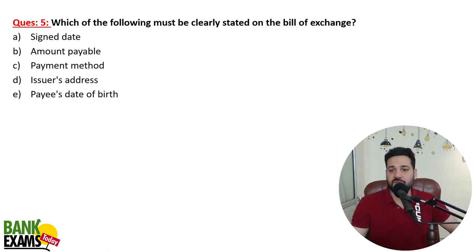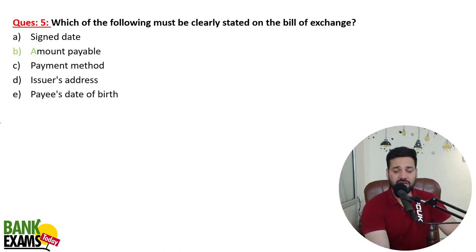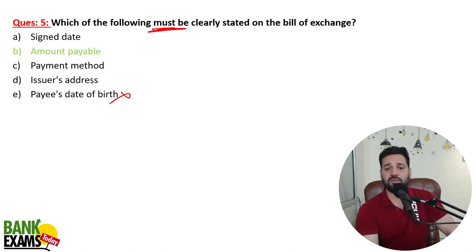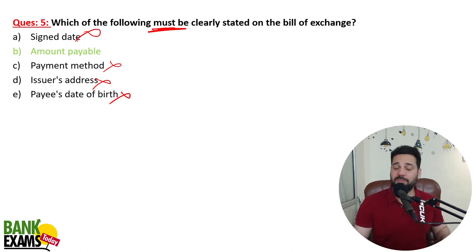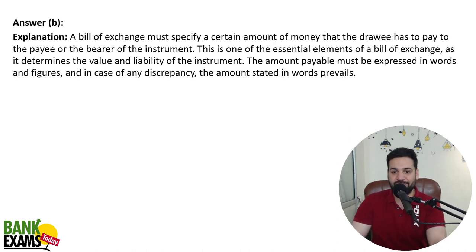Which of the following must be clearly stated on the bill of exchange? Signed date, amount payable, payment method, and issuer address — but the payee's date of birth is not required. Similarly, address is not required, payment method and the date of the signature are not required. The amount payable should definitely be mentioned. You can pause and read the explanations if you want.